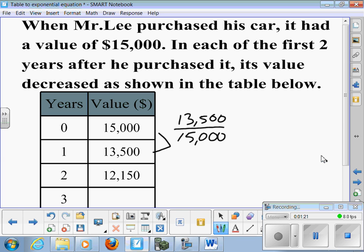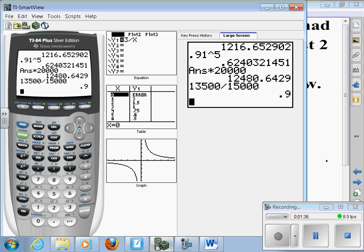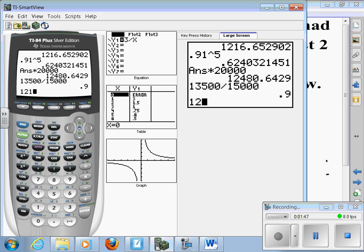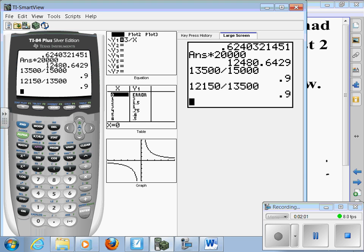Let's check on the second year just to be sure. So we'll do $12,150 compared to $13,500 on our calculator. $12,150 divided by $13,500. Well, that is also 90%.